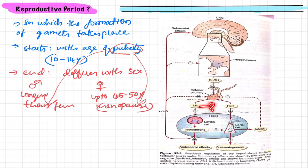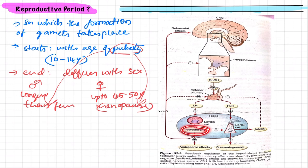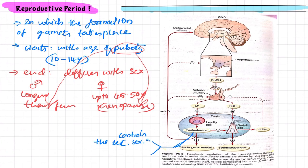Regarding LH: luteinizing hormone acts on the Leydig cells, which are the interstitial cells. They are not present in the seminiferous tubules but in the interstitial space between the seminiferous tubules. In response to LH stimulation, Leydig cells release androgens, and the special type of androgen is testosterone.